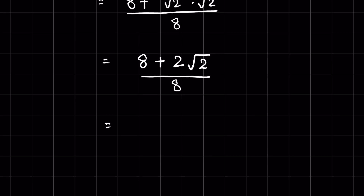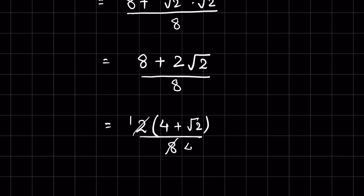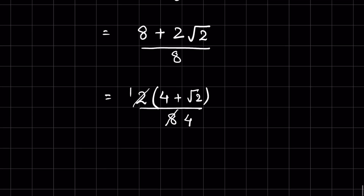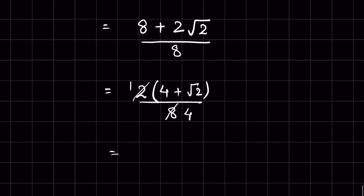We can take 2 as a common factor and factor it out, writing 2 times (4 plus square root of 2) upon 8. Now, dividing both numerator and denominator by 2, we get 4 plus square root of 2 upon 4.